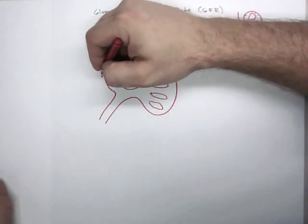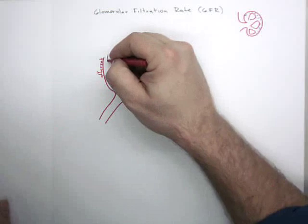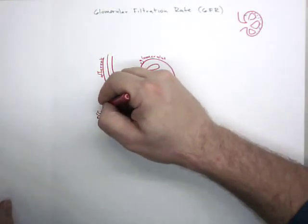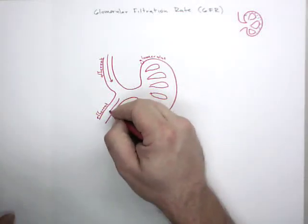Some other anatomy we care about is this is called the afferent arteriole. And this is going to bring blood in. Something called the efferent arteriole, I'm just going to abbreviate it to efferent, and this is going to allow blood to escape.